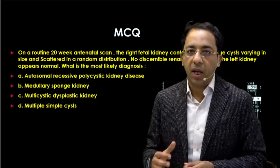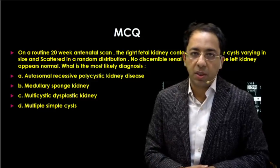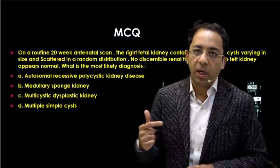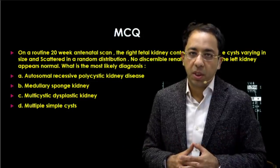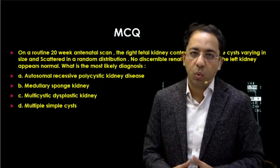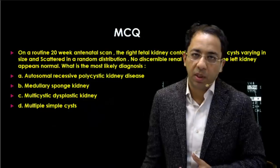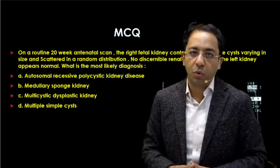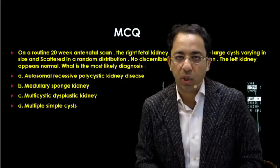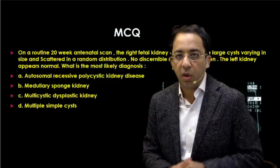An important exam question, especially in PGI Chandigarh: can you have bilateral multicystic dysplastic kidney? The answer is yes — it is possible but unusual, because it is incompatible with life. On antenatal ultrasound you may find bilateral multicystic dysplastic kidneys, but when the child is born there is no functional renal tissue whatsoever. This is a disorder incompatible with future life, and the parents would need to be counselled accordingly.